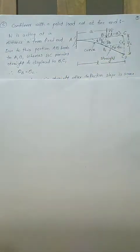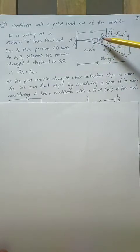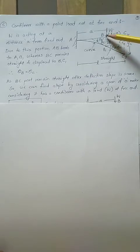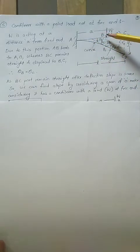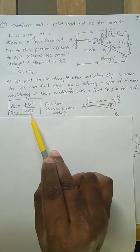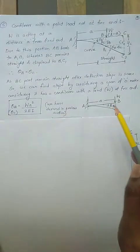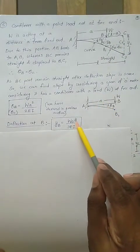Since theta_b equals theta_c and part BC is straight, the slope is the same throughout. We consider the AB part as a cantilever with W load acting at the free end. We have already derived the formula for slope when the point load is at the free end: theta_b equals W·a² / (2EI). We have derived this, so directly theta_b or theta_c equals W·a² / (2EI). Similarly, deflection at B equals W·a³ / (3EI), as derived in the previous video.